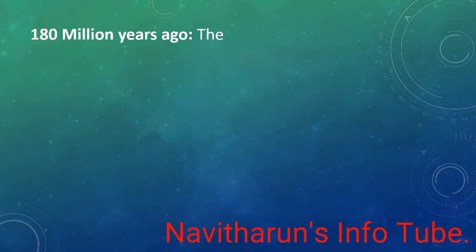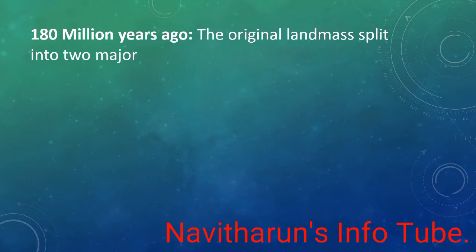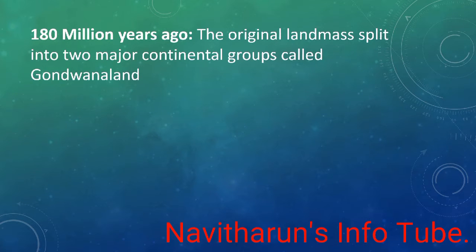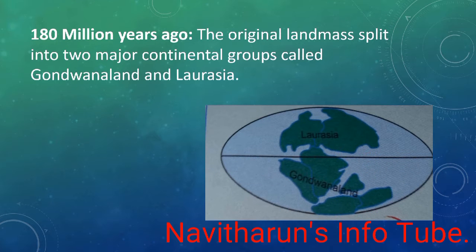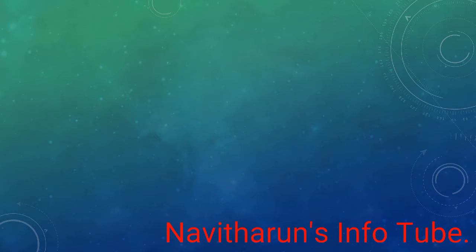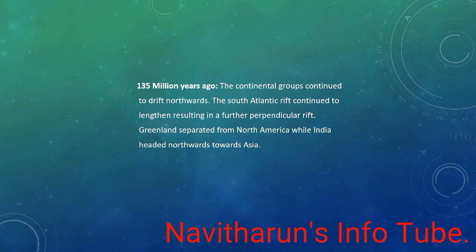180 million years ago, the original landmass split into two major continental groups called Gondwana Land and Laurasia. 135 million years ago, the continental groups continued to drift northwards. The South Atlantic rift continued to lengthen, resulting in a further perpendicular rift. Greenland separated from North America while India headed northwards towards Asia.